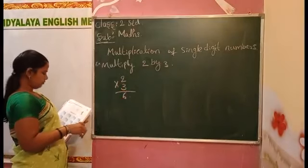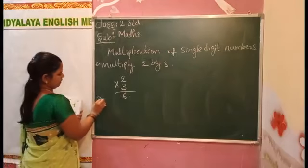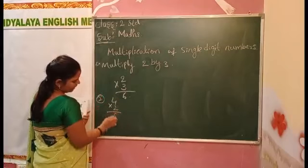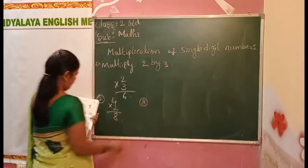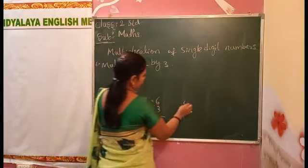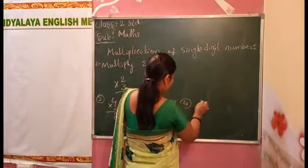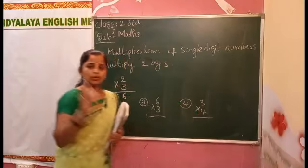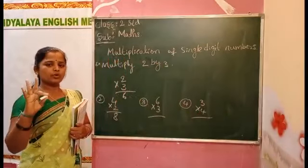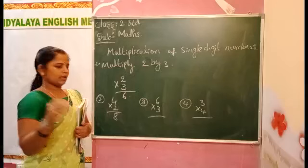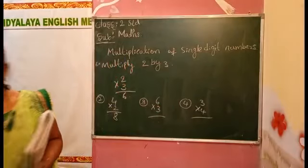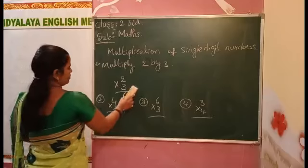Next, second one. 4 twos are 8. Third one, 6 threes are 18. Fourth one, three fours are 12. You have to write in each row only 3-3 sums. Each row 3-3 sums. Keep distance in between sums. Don't mix up all.